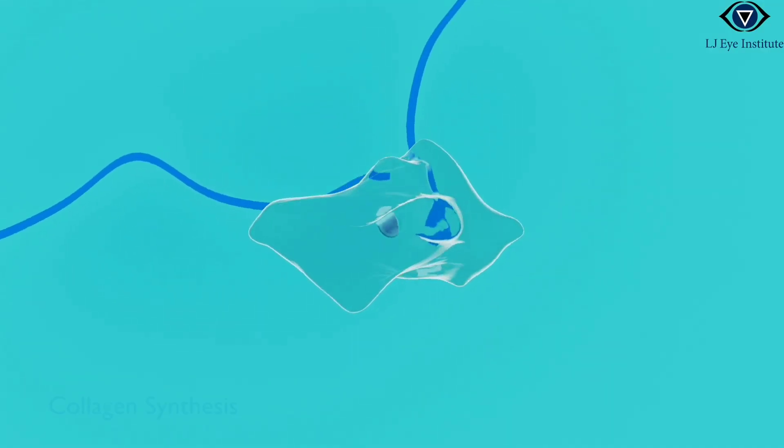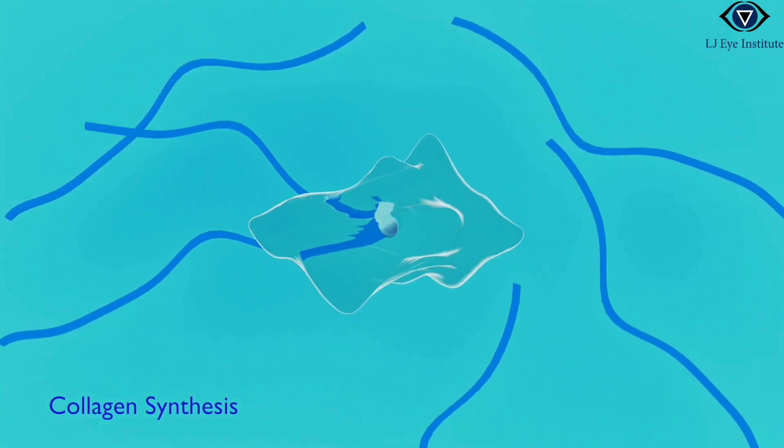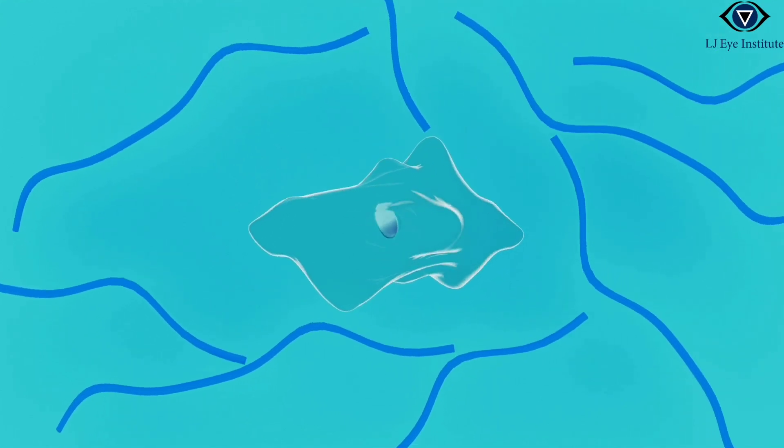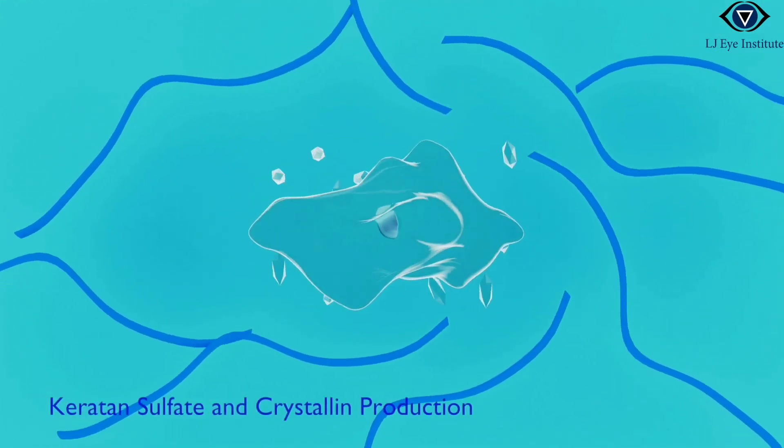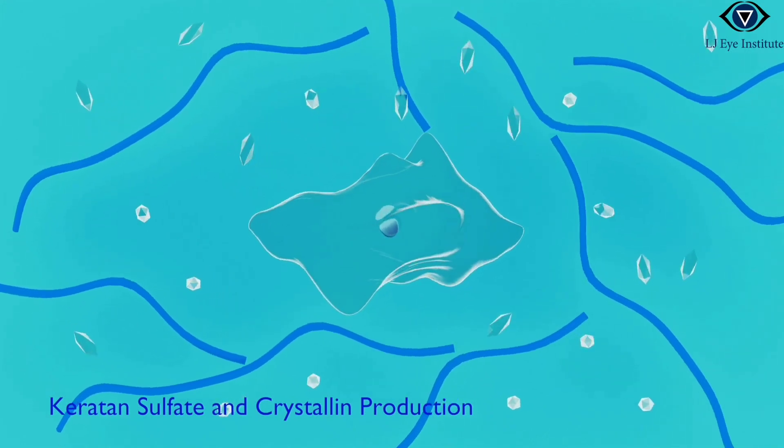In its early years, keratocyte begins to shape the very fabric of the cornea, meticulously synthesizing collagen types 1, 5, and 6, and crafting keratan sulfate that lend the cornea its structure and strength. As time passes, keratocytes mature into master craftsmen.